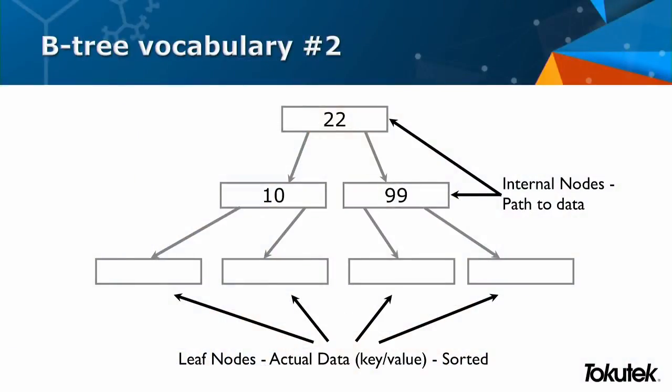Another important vocab point: most B-tree implementations have internal nodes — the top-level nodes in a tree — and then leaf nodes at the bottom. The internal nodes are there for pathing; they help you get to data quickly. The leaf nodes, if you're a database person, that's where we store the actual data. In my example we'll use simple numbers as keys, but these are key-value pairs — your actual data. If you're doing MySQL, it's a row; if you're doing MongoDB, it's a document in a collection. And you store these sorted in the bottom for fast access.